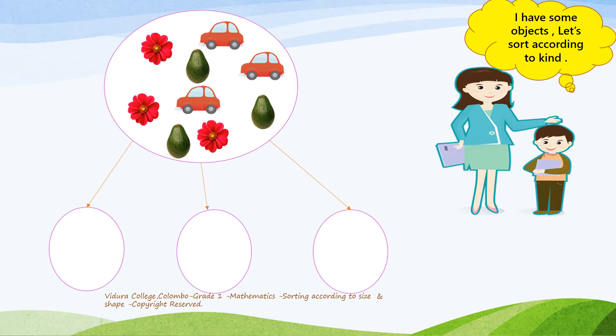Okay, here are some cars, avocados and flowers. We supposed to sort them according to their kind. So, shall we do it?